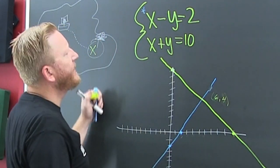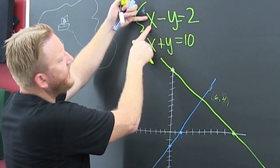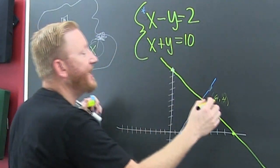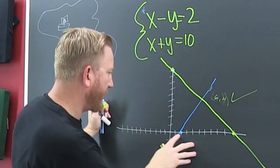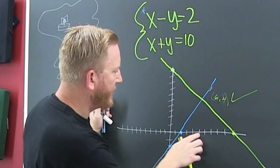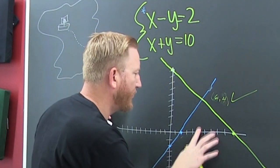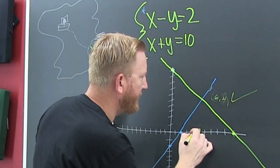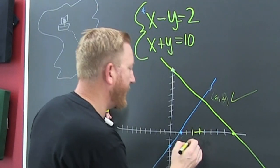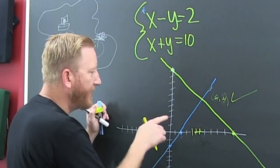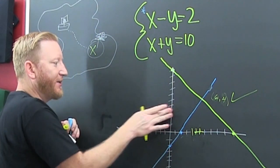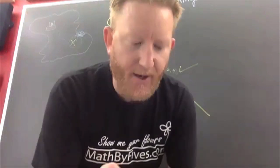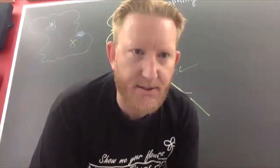Does that even look right? Let's see — 6 minus 4 is 2, and 6 plus 4 is 10. That's it! But wait — this point shouldn't be there; it needed to be 6, so I need another tick. Clearly, we should talk about checking solutions to systems.